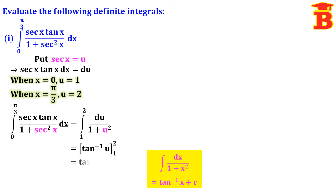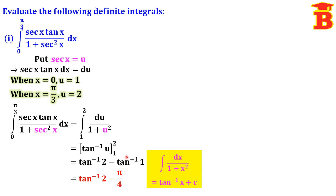Using that formula, this equals tan inverse of u with the limit from 1 to 2. Substituting the limits: tan inverse of the upper limit 2 minus tan inverse of the lower limit 1. For the number 1, we have the table value tan(π/4) = 1, so that angle is π/4. Therefore the answer is tan inverse 2 minus π/4.